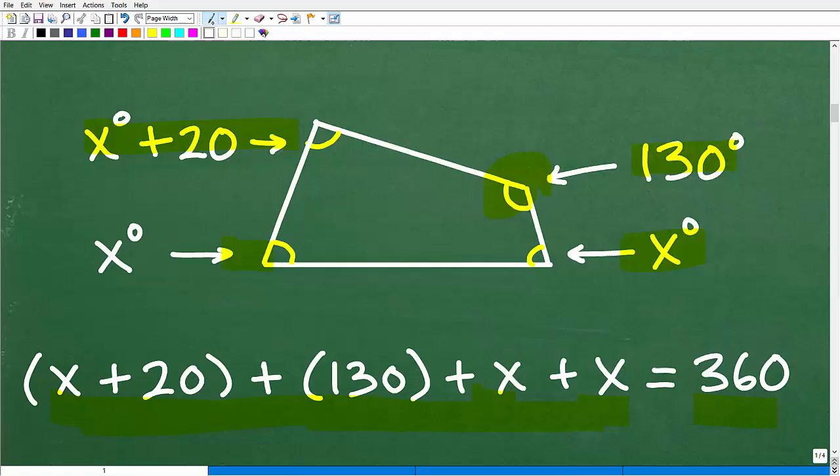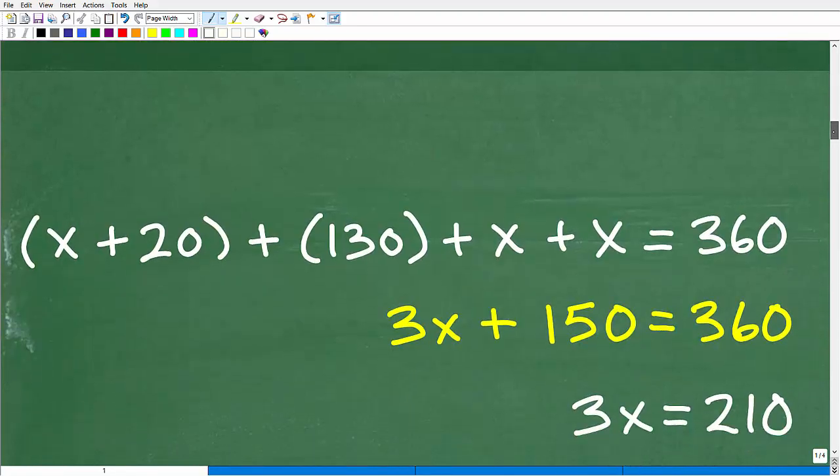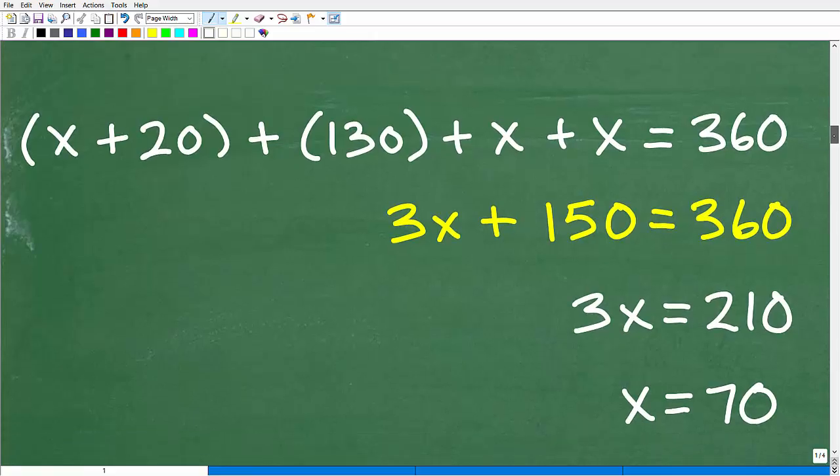So now that we have our equation, really it's up to you and your algebra skills to solve for x. So we've got to remember when we do solve this equation for x, that's going to be these two angles right here. And then to get this angle, we're going to have to take x and add it to 20.